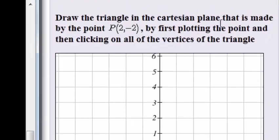Draw the triangle in the Cartesian plane that is made by the point 2 and negative 2, by first plotting the point and then clicking on all of the vertices of the triangle.